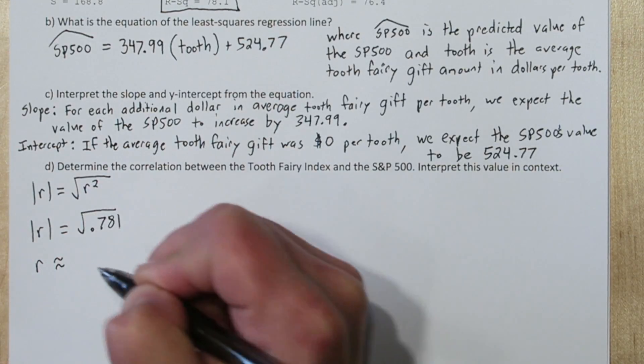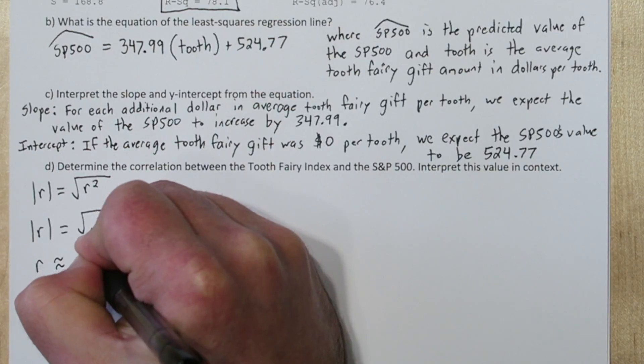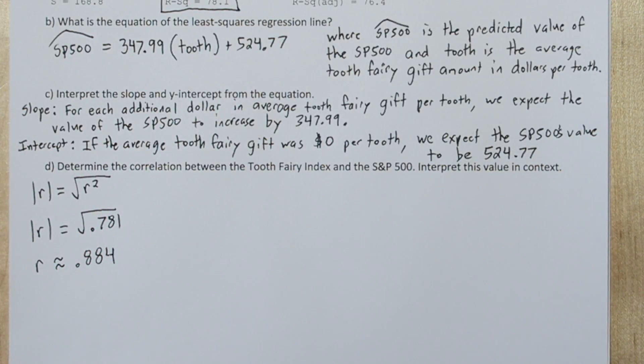But by looking at the scatterplot, we know the direction was positive. So our r value must be about 0.884, which is the square root of 0.781.